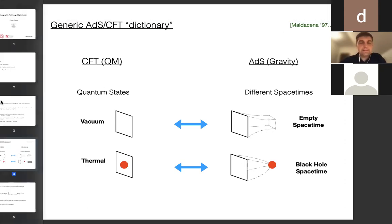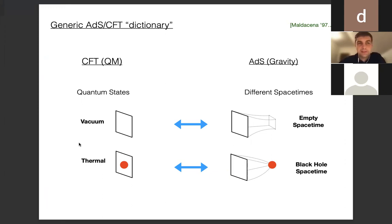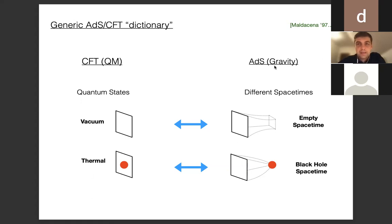The main body of this work is embedded in the so-called AdS/CFT correspondence. When we think about AdS/CFT we usually have in mind the generic dictionary between quantum mechanical systems in d dimensions and quantum gravity on AdS spacetimes in d+1 dimensions. This is of course an old proposal due to Maldacena from 1997.